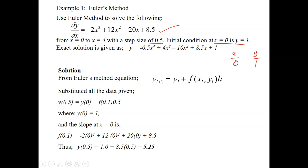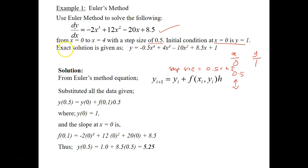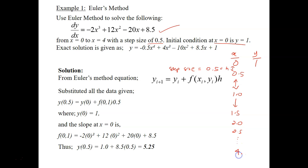The step size is 0.5, so the next point of x must be 0.5 since h equals 0.5. They ask you to predict the value of y from x equals 0 to x equals 4, so the last point of x has to be 4. After 0.5 it should be 1.0, then 1.5, 2.0, 2.5, and so on until 4. So you need to predict all the values of y involved.